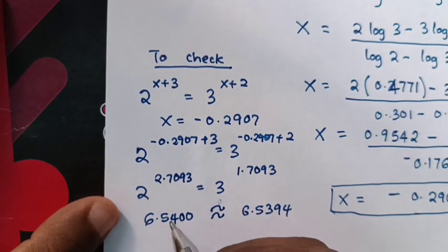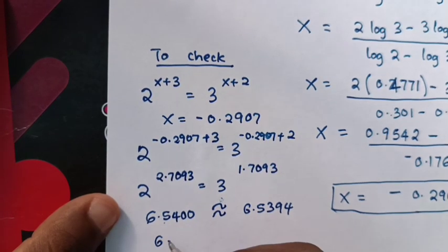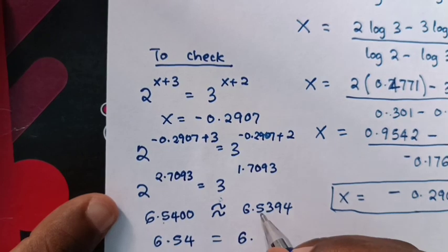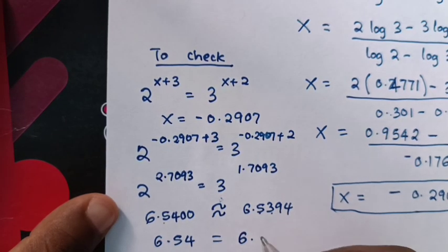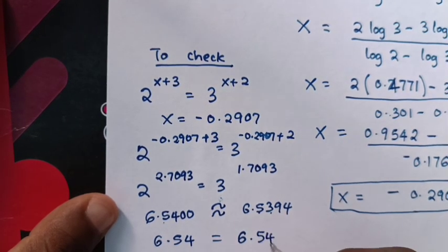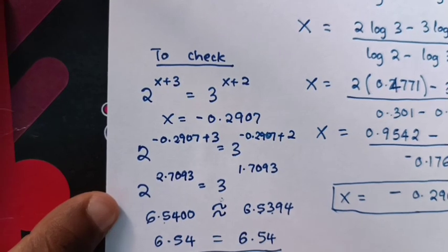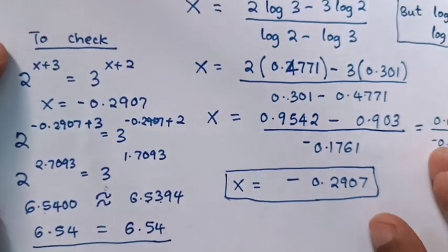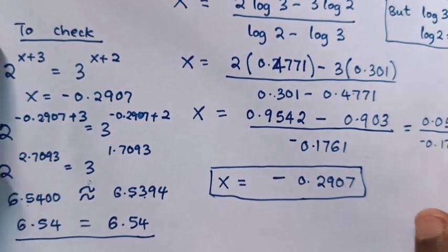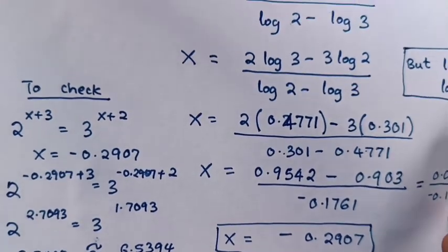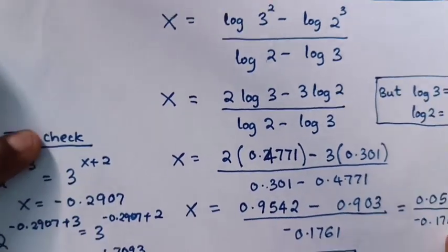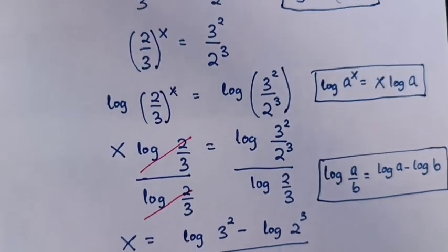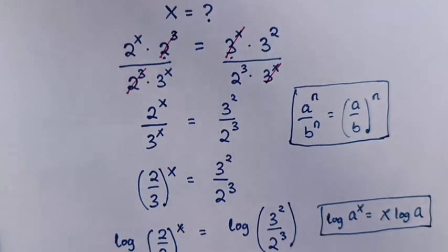To two decimal places, both give 6.54, so the left side equals the right side. Therefore the value of x is confirmed correct. Don't forget these steps. Subscribe to my channel and see you in the next video. Bye-bye.